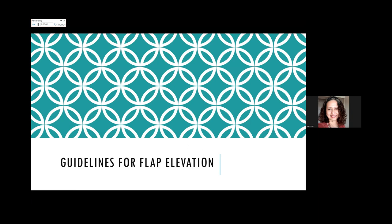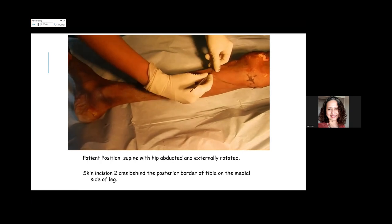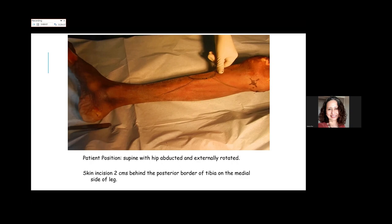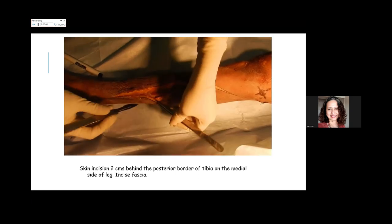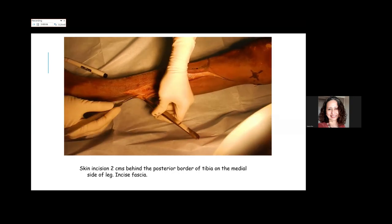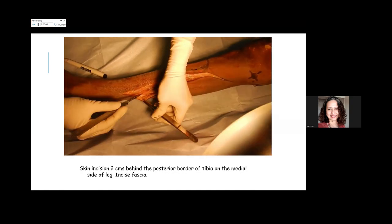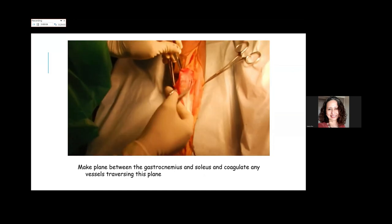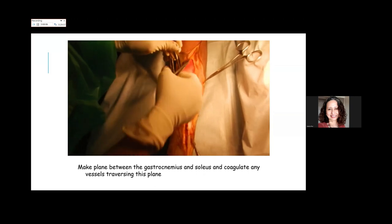Advantages of the soleus: consistent anatomy, reliable neurovascular pedicles, bipennate morphology allowing transfer of just half the soleus, leaving the other half for the patient. Functional and cosmetic deformity are minimal. The muscle can reach the lower third on distal blood supply. It is a conventional workhorse for the middle third. Disadvantages include a visible scar on the posterior leg and the need to understand the blood supply well before doing the flap.